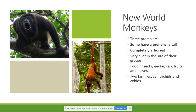Now let's talk about new world monkeys. In the new world, except for humans, we are not going to find any other type of anthropoid. New world monkeys have three premolars, and the number of premolars is very important in evolution. A typical mammal has four premolars, prosimians have three premolars, new world monkeys also have three premolars, but old world monkeys, apes, and humans have only two premolars — showing an evolutionary trend of premolar reduction in primate evolution.